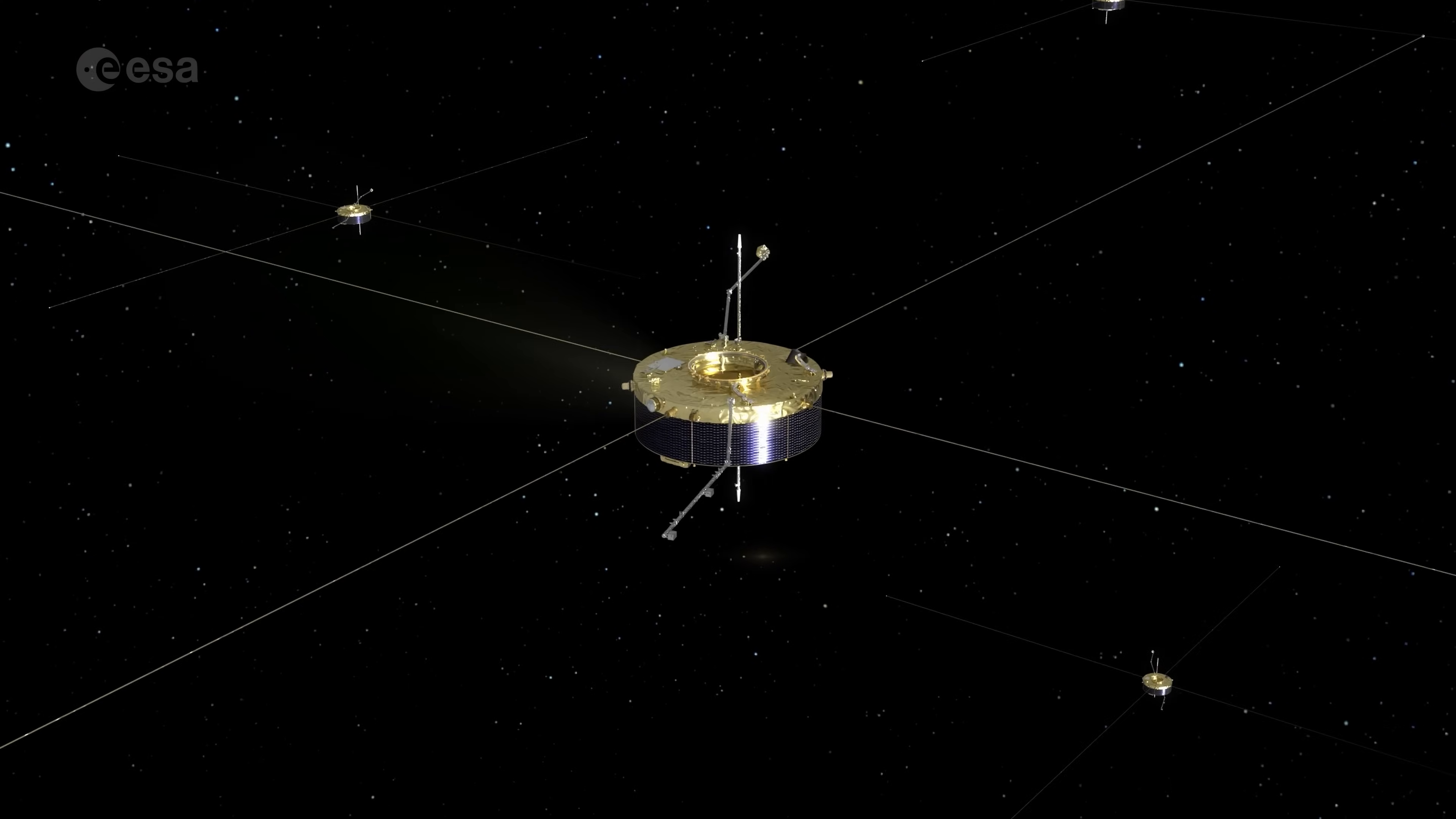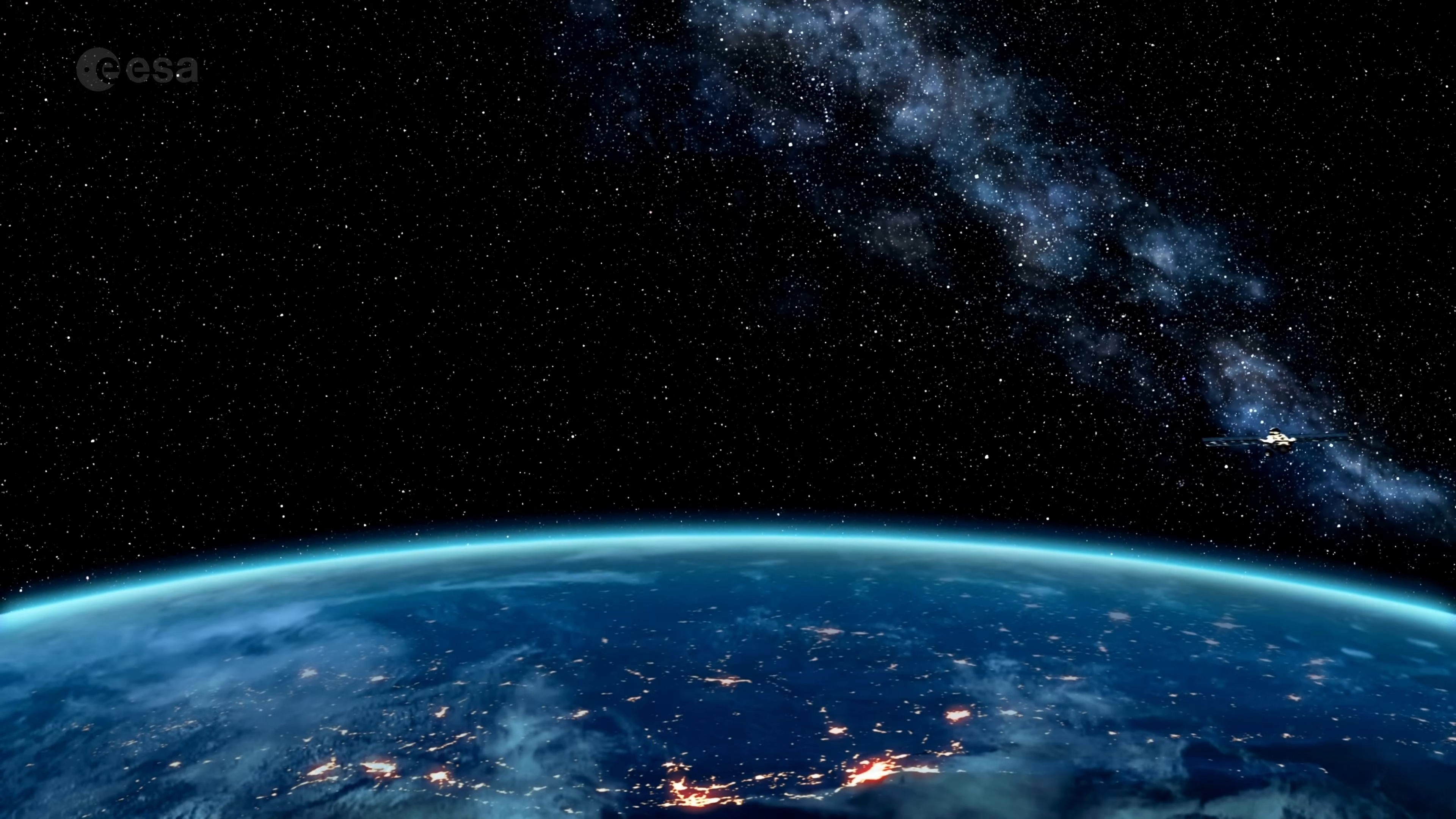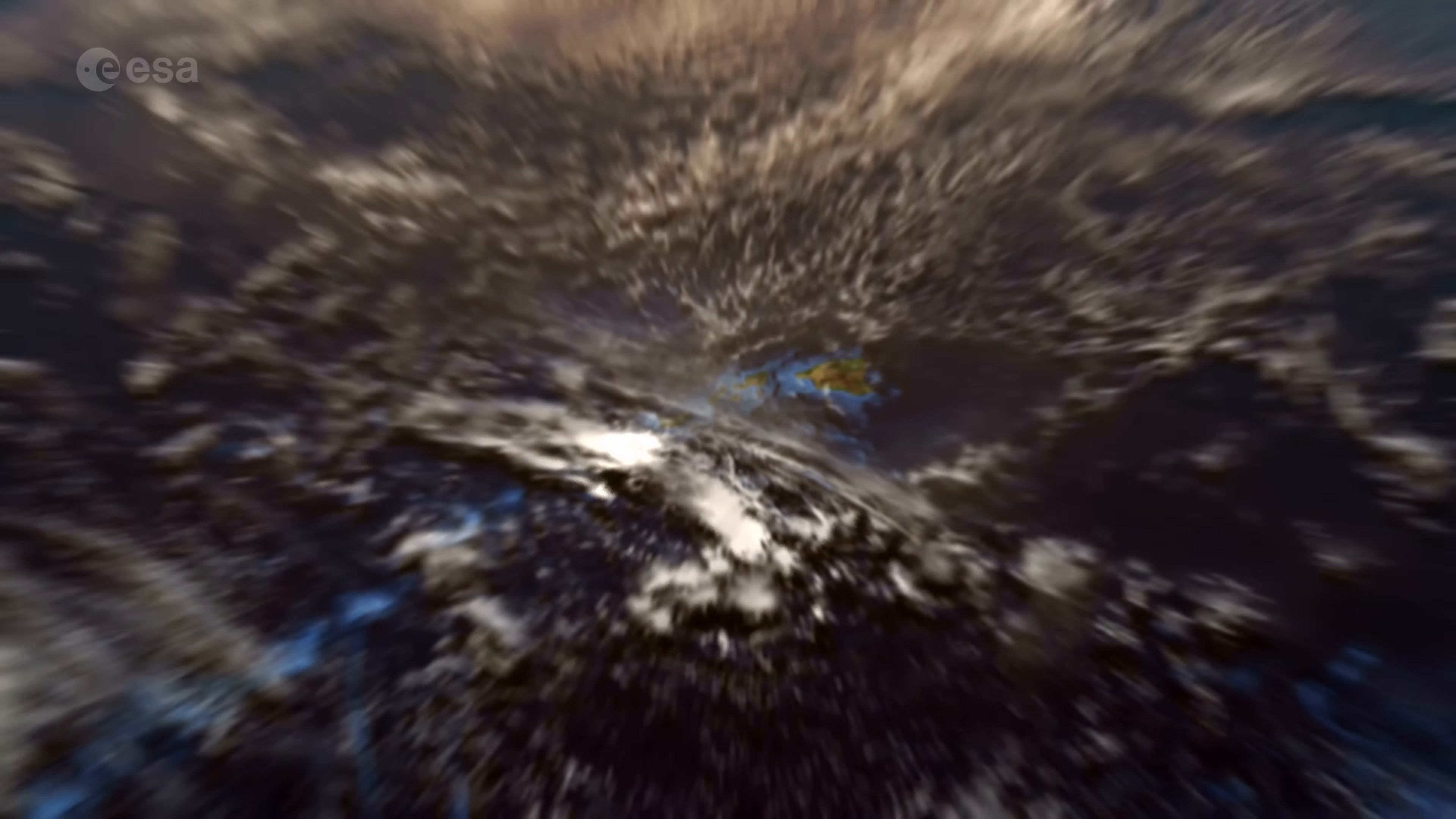This isn't just a routine de-orbit, it's a carefully planned, targeted re-entry, starting with the satellite Salsa. Most satellites re-enter Earth's atmosphere in an uncontrolled manner. They are switched off at the end of their mission and left to gradually give in to Earth's gravity and burn up in the atmosphere.